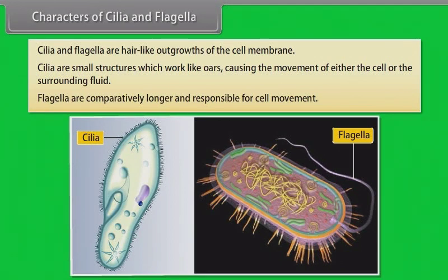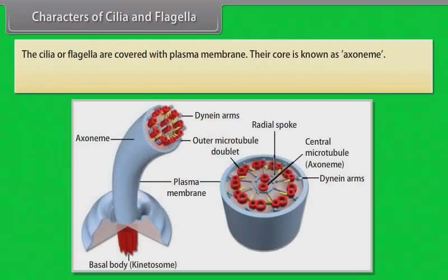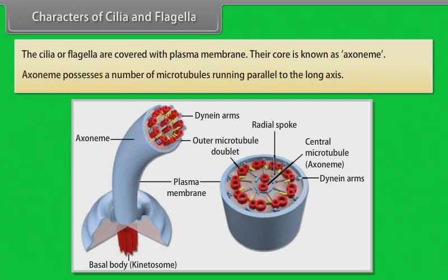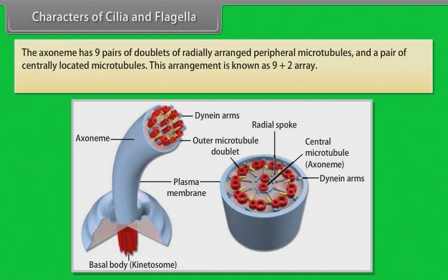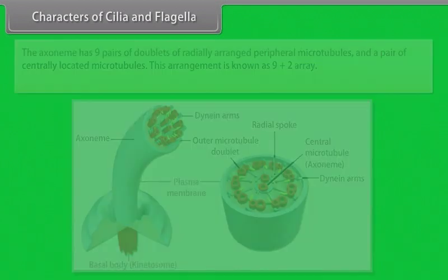Flagella are comparatively longer and responsible for cell movement. The cilia or flagella are covered with plasma membrane. Their core is known as axoneme. The axoneme possesses a number of microtubules running parallel to the long axis. The axoneme has 9 pairs of doublets of radially arranged peripheral microtubules and a pair of centrally located microtubules. This arrangement is known as the 9+2 array.